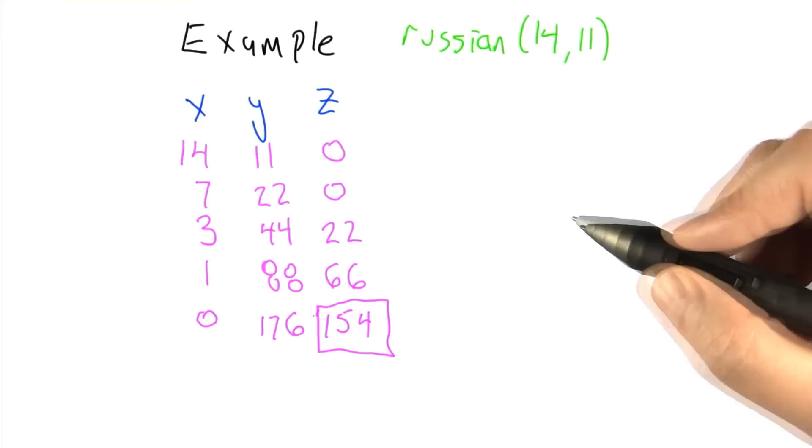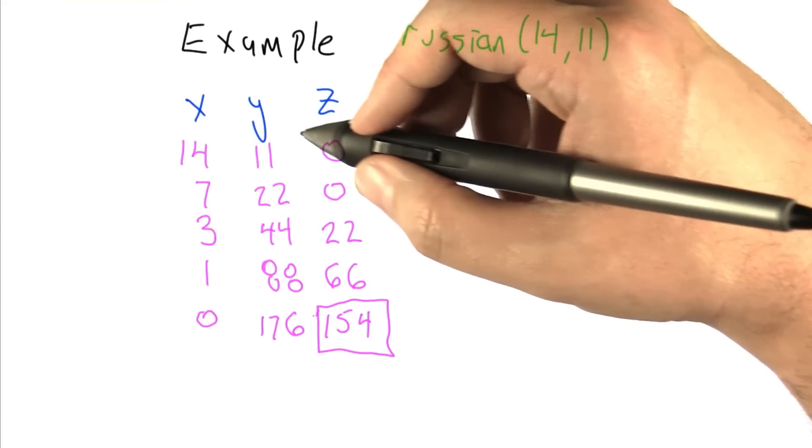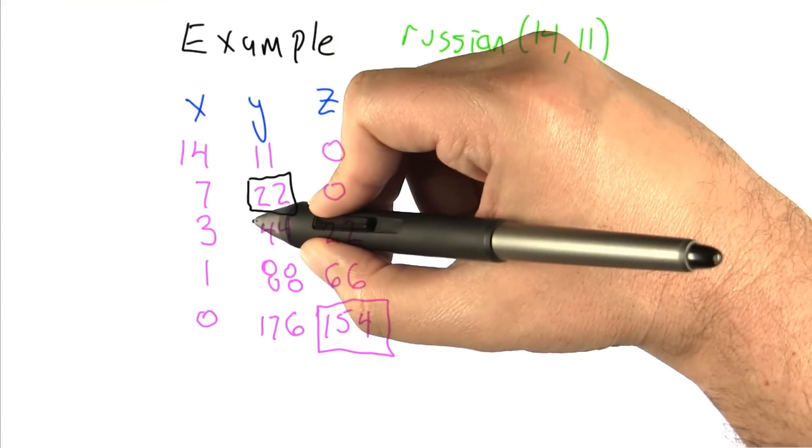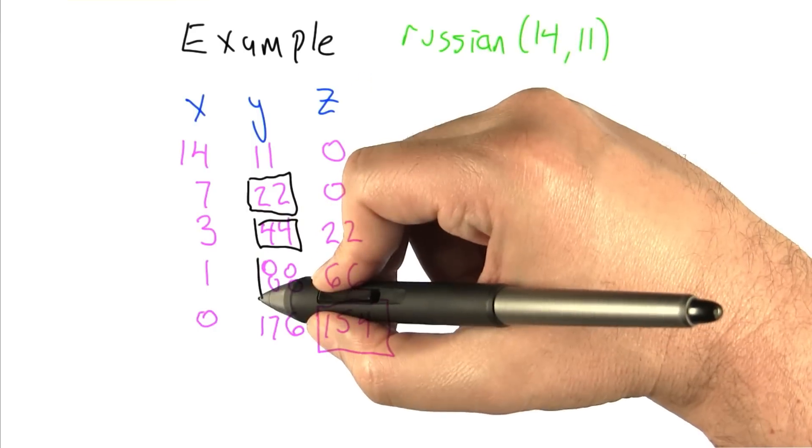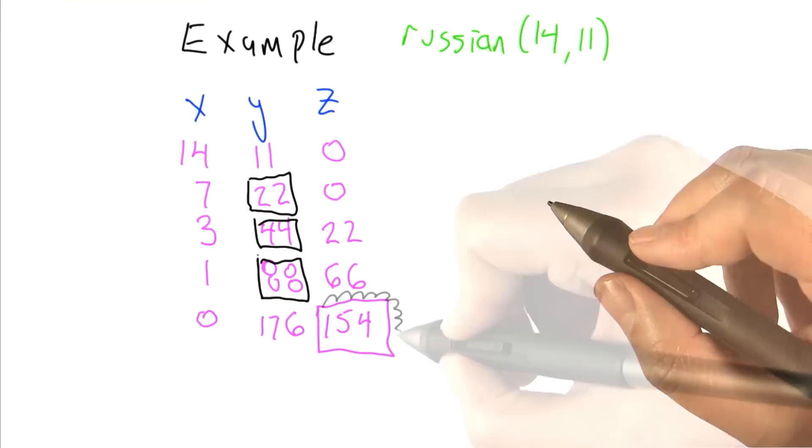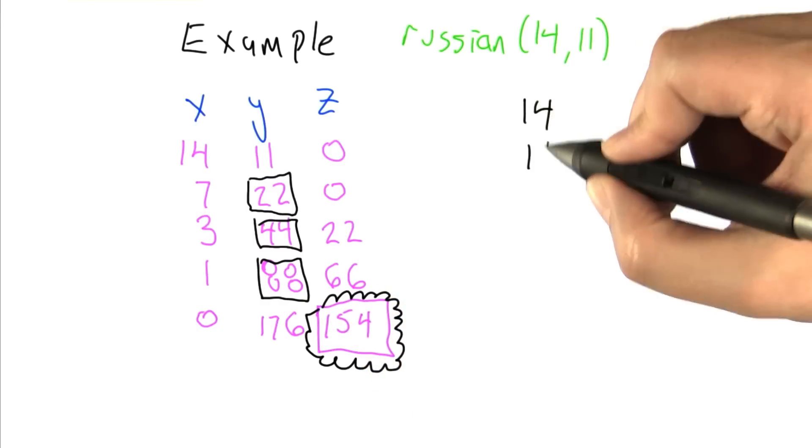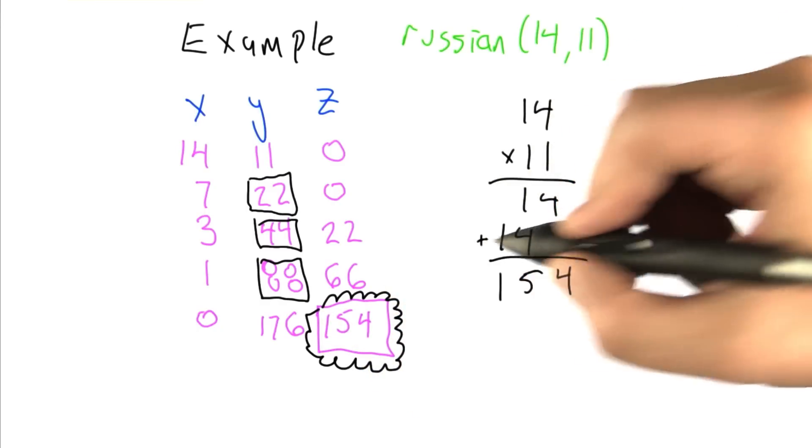So it seems to have done the right thing. What we've really done here is we've added several values of y. Each of the times, as x is counting down, each of the times x becomes odd, we add those together. So that ends up being the sum of those three numbers. So you have to admit, that's kind of cool, right? It's somehow doing the equivalent of 14 times 11, but not the way we would normally do it.